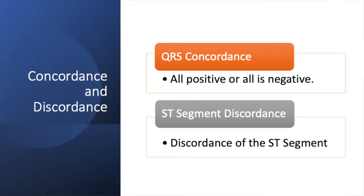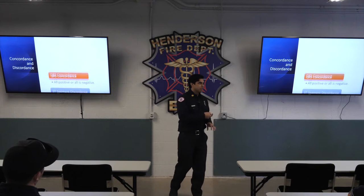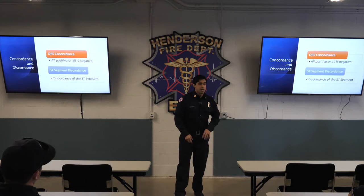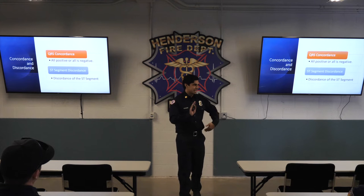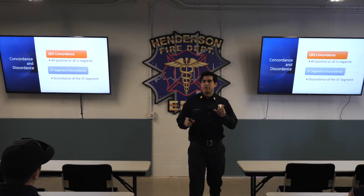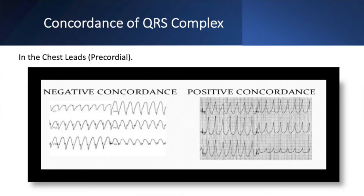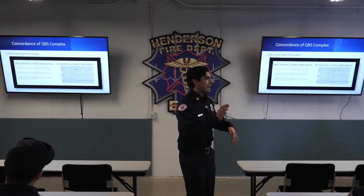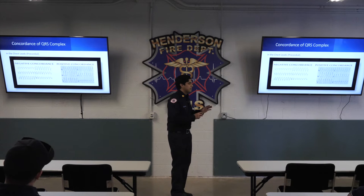Concordance and discordance — we mix these up when it comes to QRS and ST segment. When talking about arrhythmias, we're usually talking about concordance of QRS complexes. In the context of bundle branch blocks, we talk about discordance of the ST segment. These terms are not interchangeable. Negative concordance in the precordial leads means the primary deflection of all six views is negative. Positive concordance means all primary deflections are positive — all R-waves going the same direction.